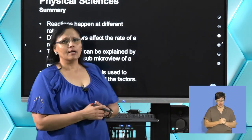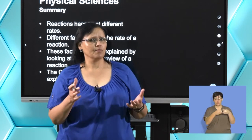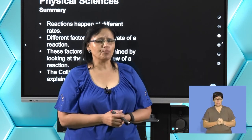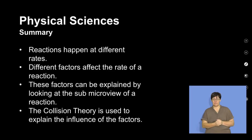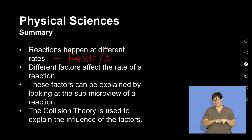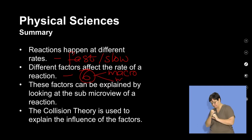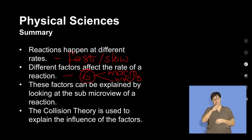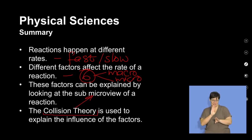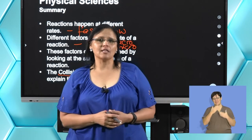We also spoke about the nature of the products and their reactivity. In closing, reactions happen at different rates — reactions can be fast or slow, depending on what we're reacting. There are six different factors that affect the rate of a reaction. We spoke about these factors both macroscopically and microscopically. These factors can be explained by looking at the sub-micro view of a reaction through the collision theory. Thank you.